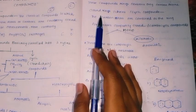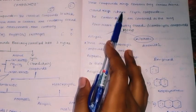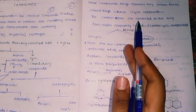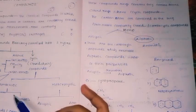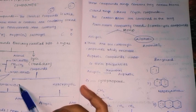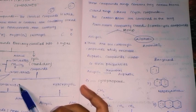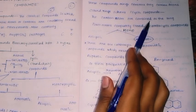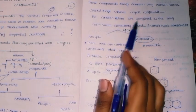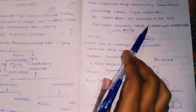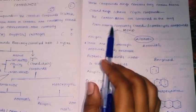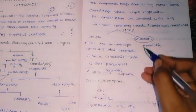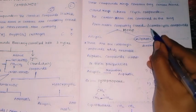For closed rings, the definition is: these compounds contain only carbon atoms. Carbon atoms are combined as a ring — completely closed. These are called carbocyclic compounds.